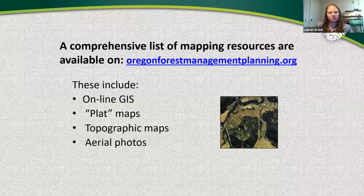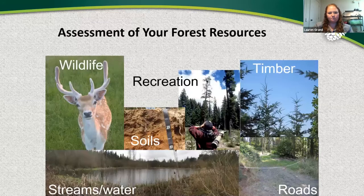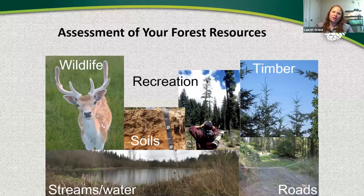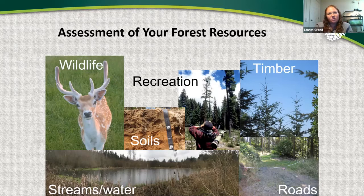All these mapping resources are available on the Oregon Forest Management Planning website that Ryan showed earlier. If you have questions about using any of those resources, you can reach out to your local extension agent for help. Once past maps, you'll do an assessment of the forest resources on your property — the meat and bones of your management plan. It's a comprehensive description of timber, road network, streams and water, wildlife, soils, and recreation, with an intentional look at all resources, not just timber, since many owners have goals beyond timber management.